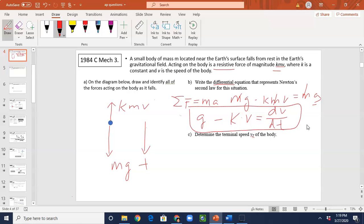Lastly you have to determine the terminal speed. What does terminal speed mean? Terminal speed implies acceleration equals to zero. That means at the terminal speed G minus K VT has to be zero. And this gives you VT has to be G divided by K. This is the terminal speed.